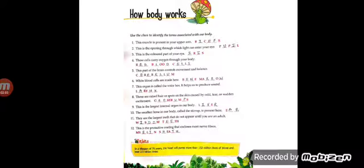First, this muscle is present in your upper arm. That upper arm muscle is called biceps, B-I-C-E-P-S. Second, this is the opening through which light can enter your eye. That opening is called pupil, P-U-P-I-L. Third, this is the colored part of your eye, that colored part is called iris, I-R-I-S.